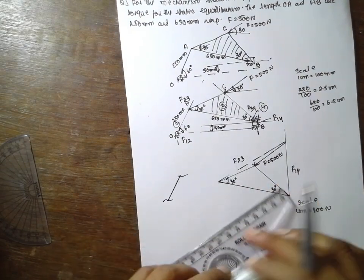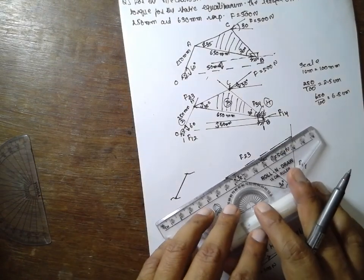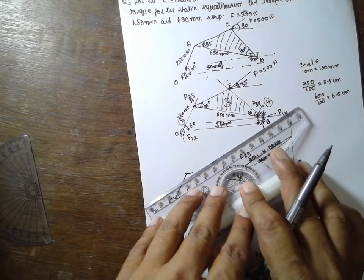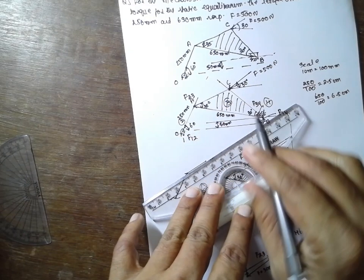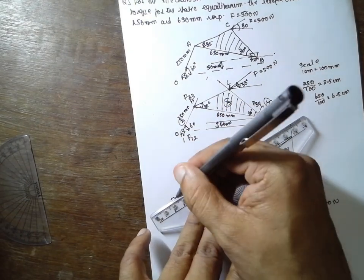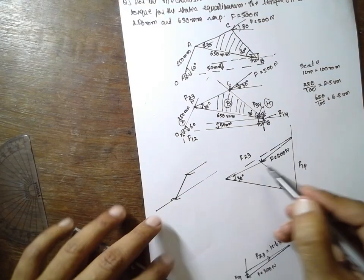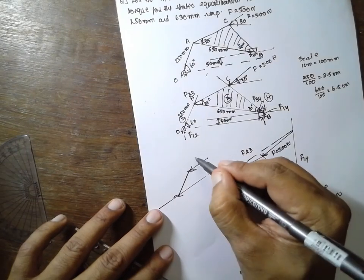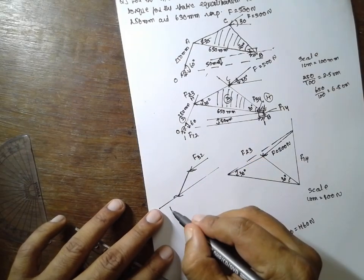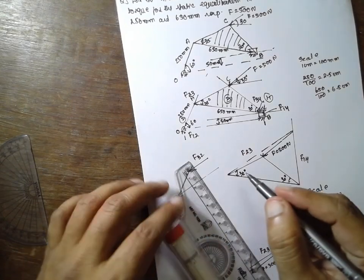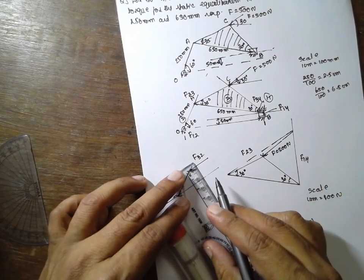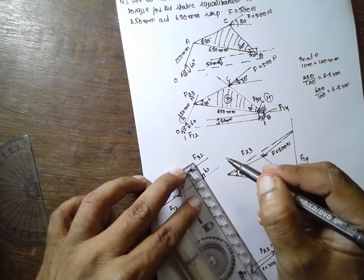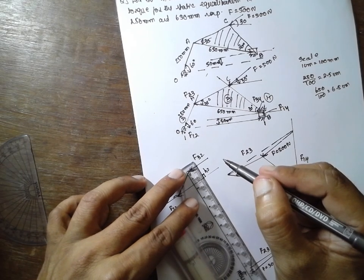Once you know the direction here, draw parallel lines. If the direction of arrow is in this direction, the next arrow will be in this direction. That is F32 and this will be F12. And H will be this part. H is 1.4.